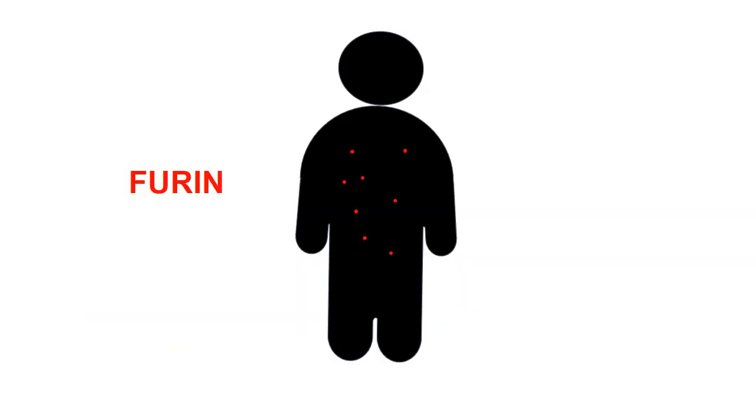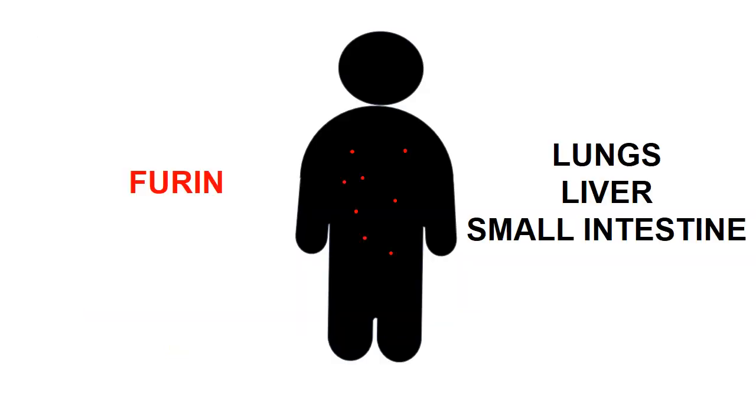Furin is found on cells in several organs, such as lungs, liver, and small intestine, meaning that the virus can attack various places of the human body.